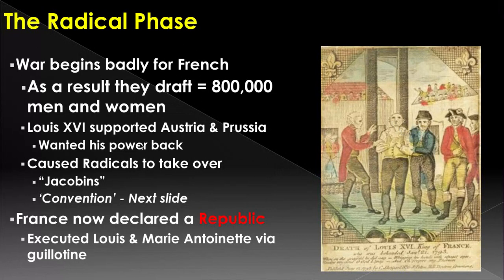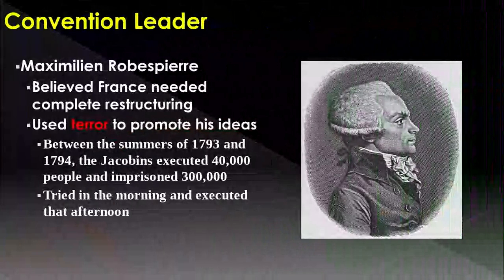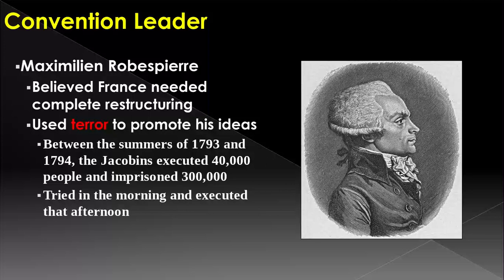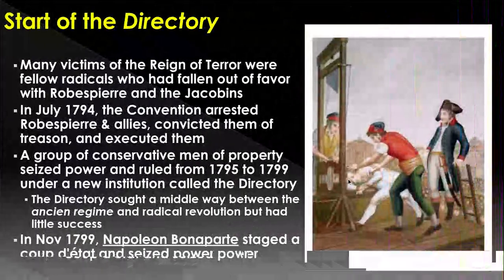They draft a bunch of men and officially go to war, fighting as a republic for their own freedoms. Then this guy, Maximilien Robespierre, actually says we need to start having harsher punishment for treasonous acts. He used terror and threats to promote these ideas — him and the guillotine are going to be super good friends. Radicals are going to be executed or imprisoned left and right, except for a major problem: Robespierre actually breaks his own law and has his own head cut off because of his treasonous acts against the state of France.